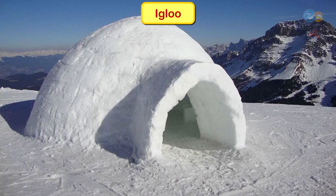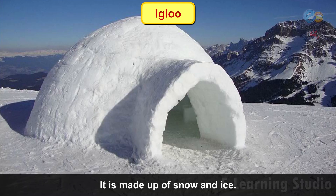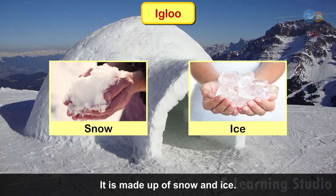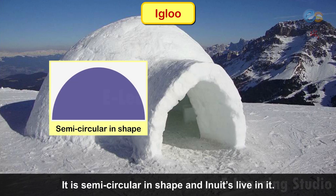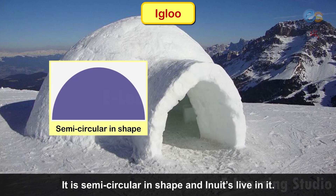Now, this is igloo. Children, it is made up of snow and ice. It is semicircular in shape and Inuits live in it.